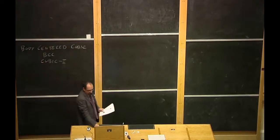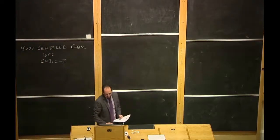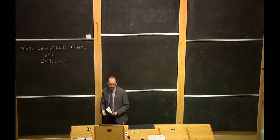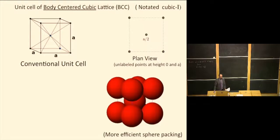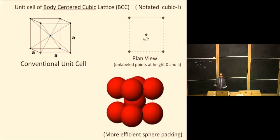We have a picture of the conventional unit cell of the body-centered cubic lattice. There is one point shared among all eight corners — one-eighth times eight of them — and then one in the center of the conventional unit cell, making two lattice points in the conventional unit cell. You can look at it from above in a plan view scheme where you label all of the heights appropriately.